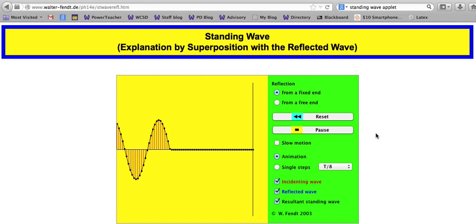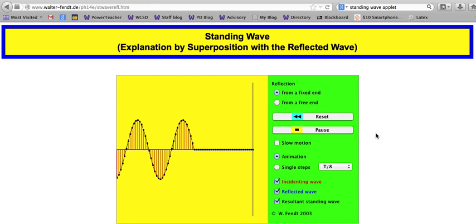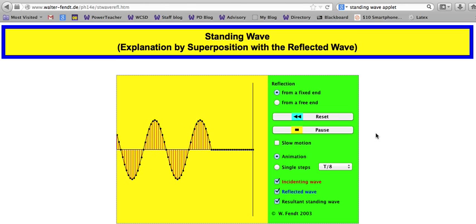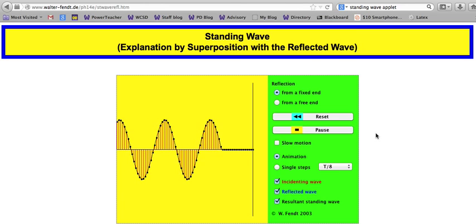There is this principle called the principle of superposition that says when we have two waves in the same place at the same time, we take the algebraic sum of the displacement caused by each wave, and that gives us our total displacement.